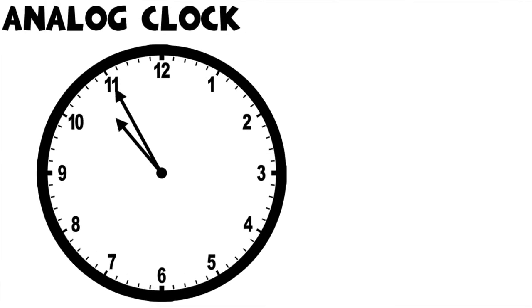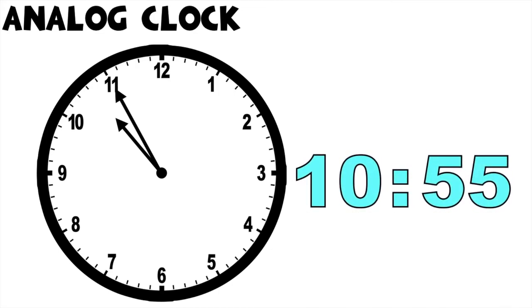How about if we have this? What time is it? As you can see, the short hand is pointed between 10 and 11. So we're going to pick the smaller number, which is 10, then followed by 55, since our long hand is pointed at 11. So the time is 10:55.